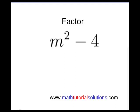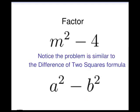Factor m squared minus 4. Notice the problem is similar to the difference of two squares formula: a squared minus b squared.